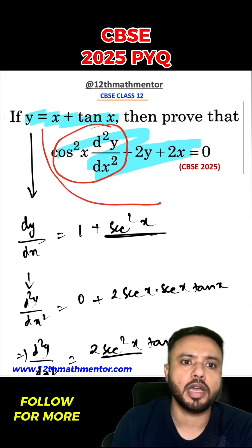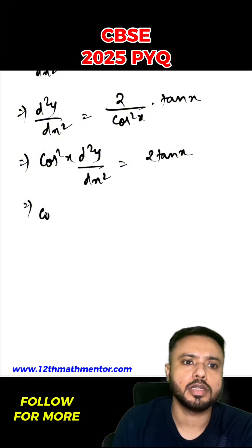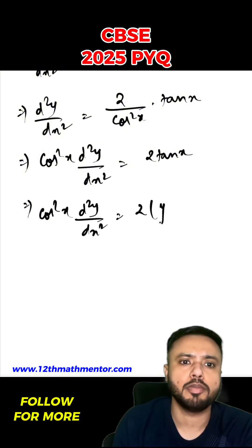Now since it was given that y equals x plus tan x, from here I can say that tan x would be equal to y minus x. So I can write this as cos²x d²y/dx² equals 2(y - x).